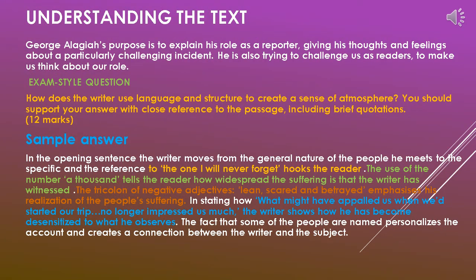Hoping that you've read the text, let's jump into the first aspect: understanding the text. George Alagiah's purpose is to explain his role as a reporter, giving his thoughts and feelings about a particularly challenging incident. He is also trying to challenge us as readers, to make us think about our own role. An example exam-style question is: 'How does the writer use language and structure to create a sense of atmosphere?' You should support your answer with close reference to the passage, including brief quotations. This is usually question number four, awarded 12 marks.